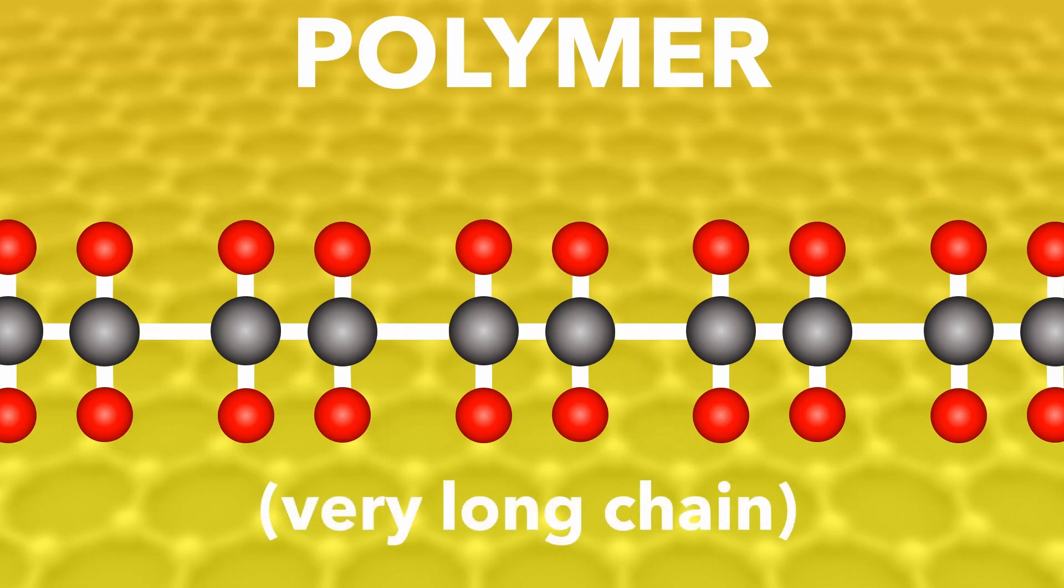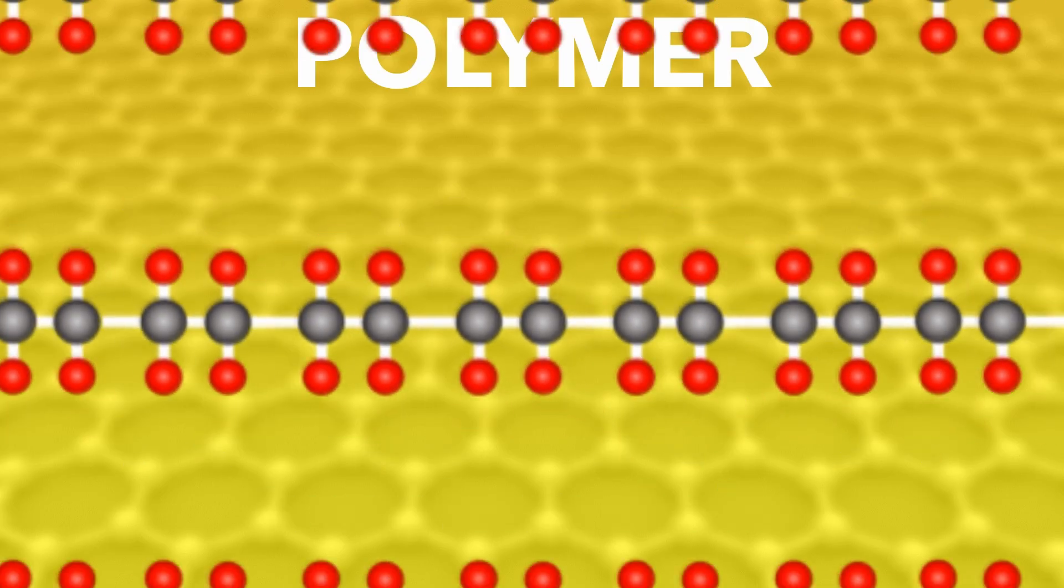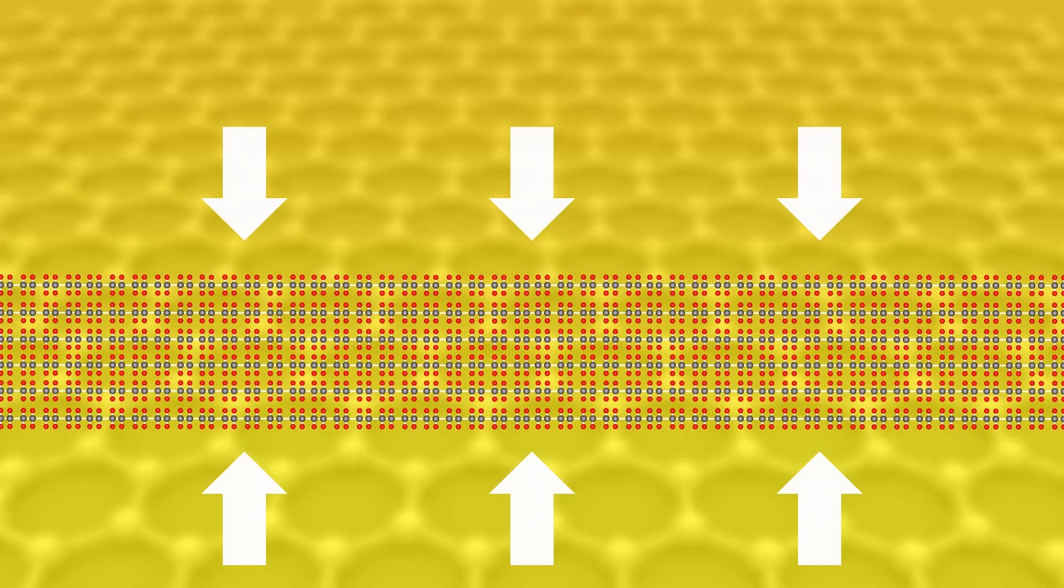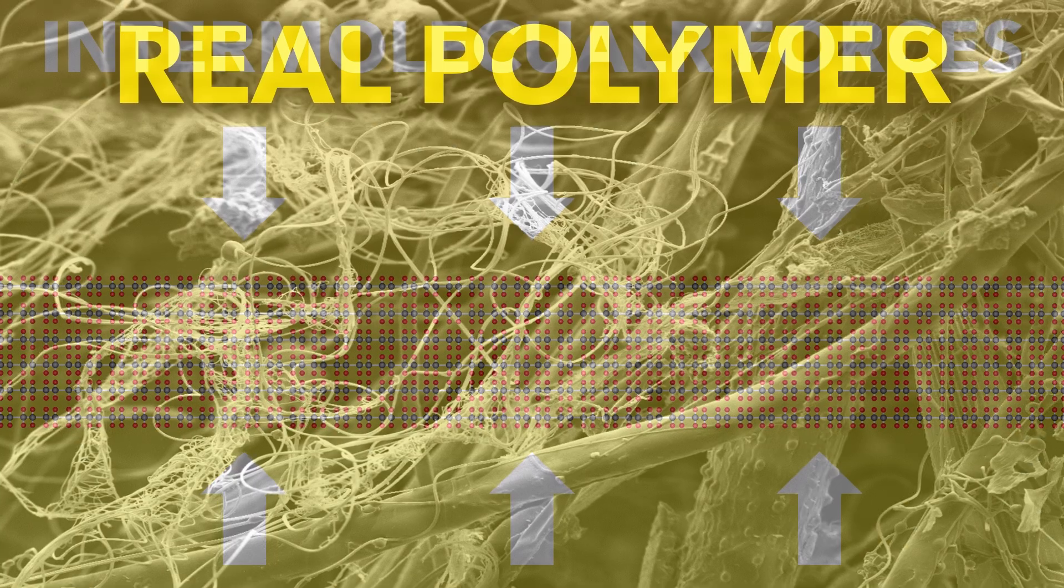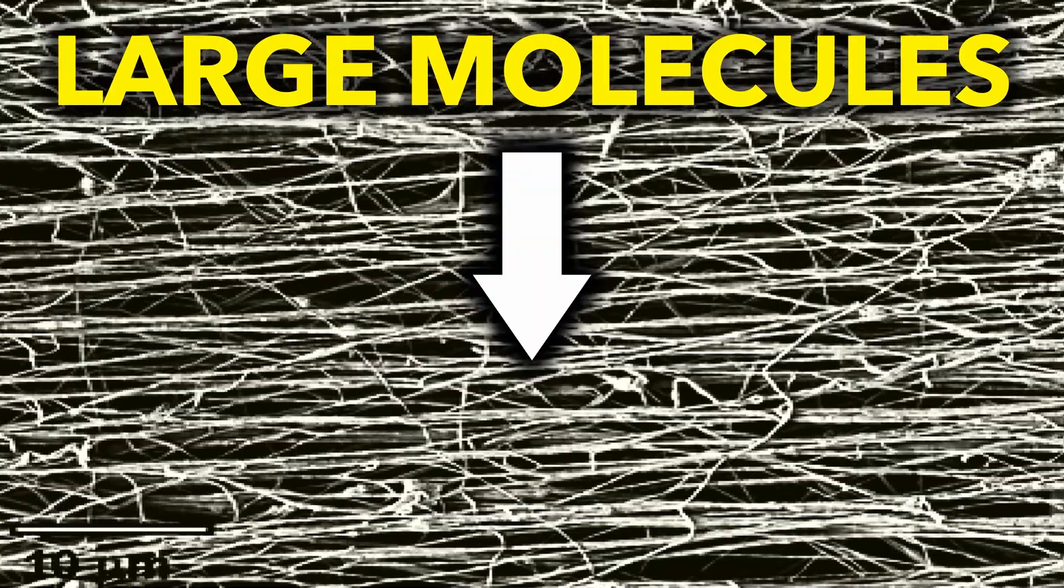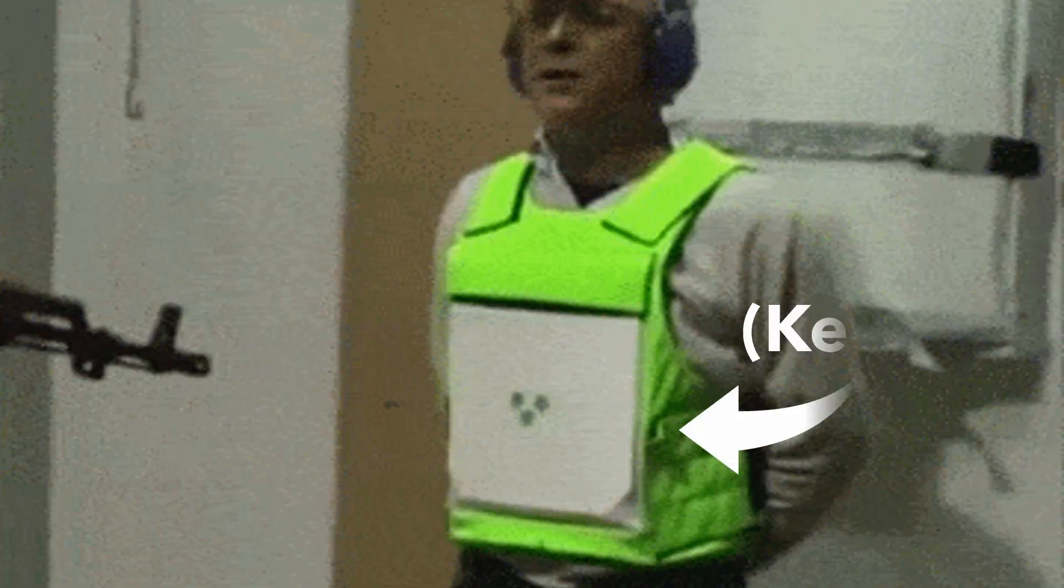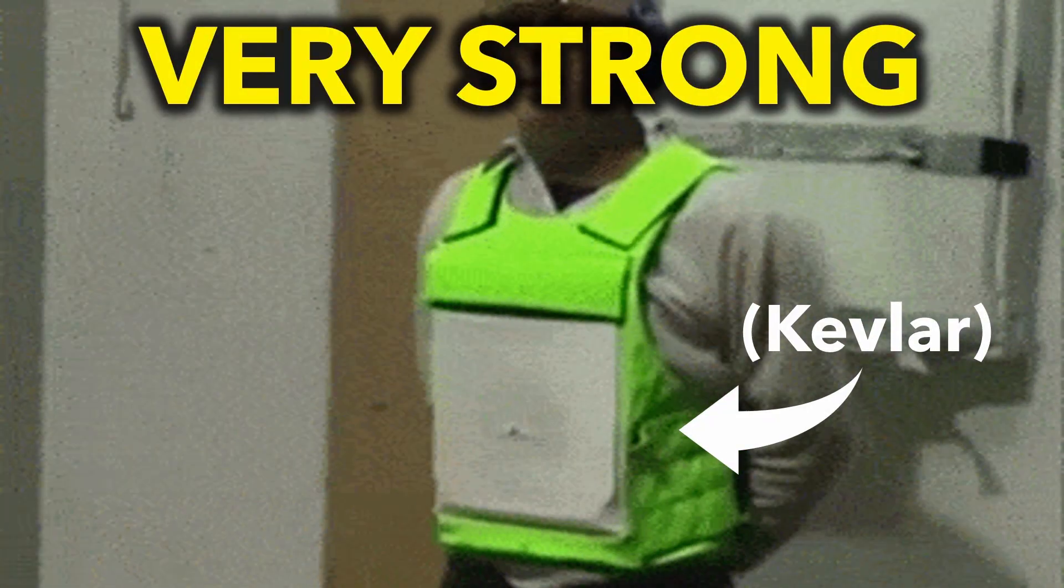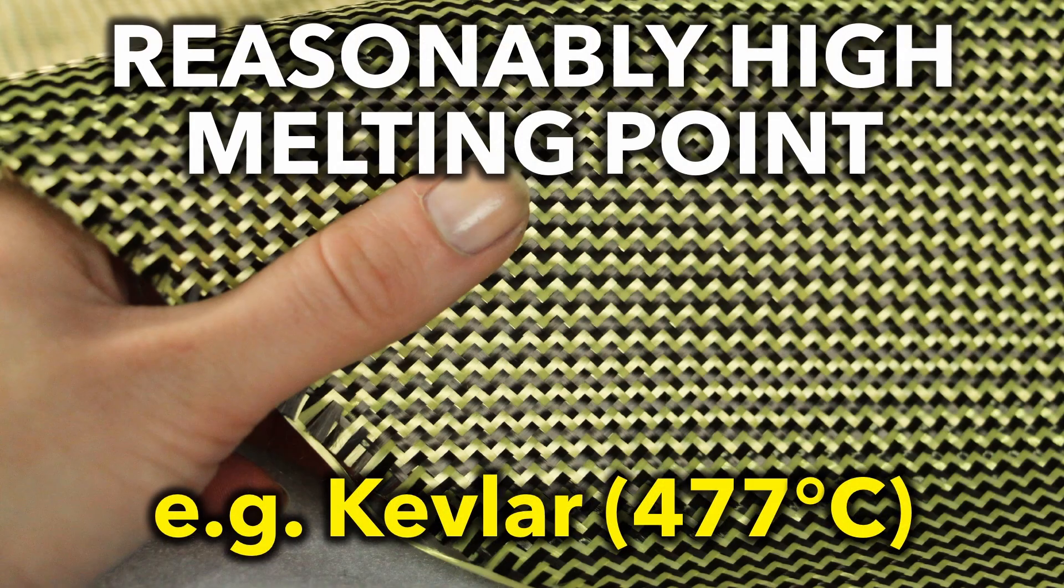The polymer chain can be thousands or even millions of monomers long. The chains then stick together by intermolecular forces, forming a large interwoven structure. Because the molecules are large, the weak intermolecular forces build up, making some polymers very strong and with a reasonably high melting point, depending on the polymer.